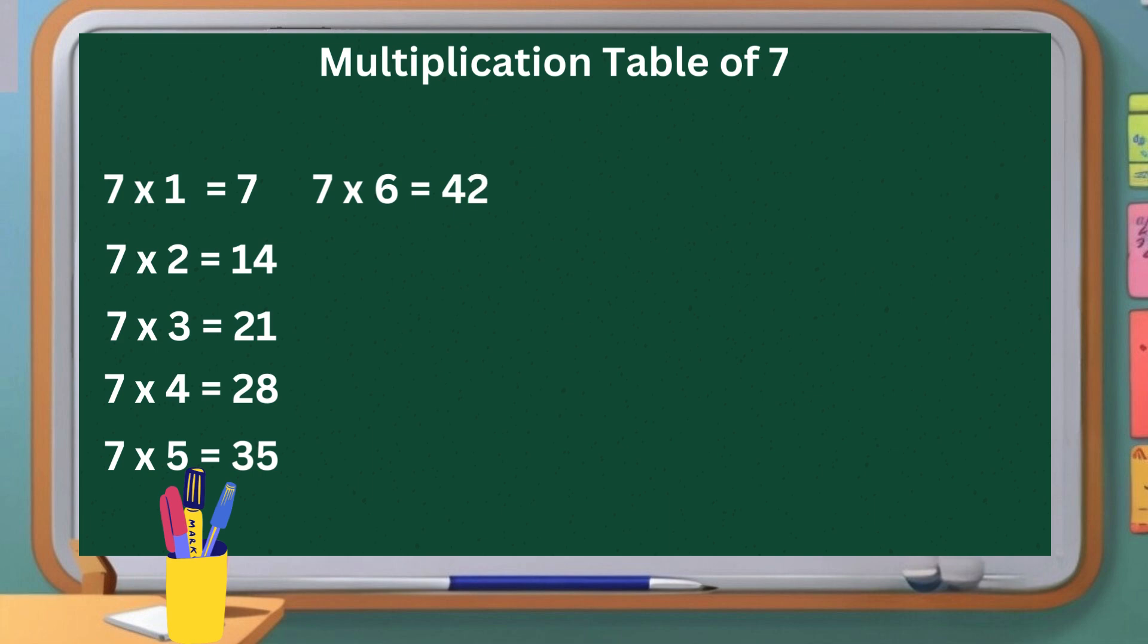Seven six are forty-two. Seven sevens are forty-nine. Seven eights are fifty-six. Seven nines are sixty-three. Seven tens are seventy.